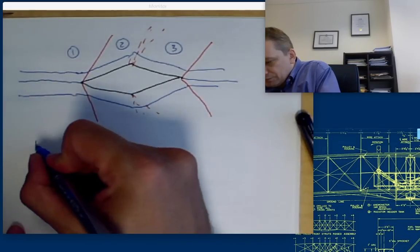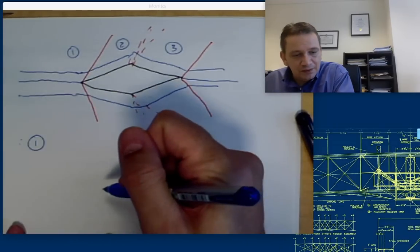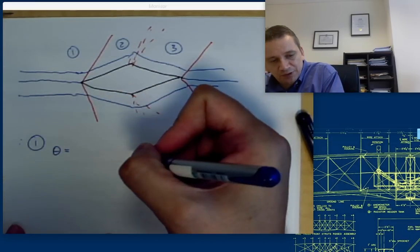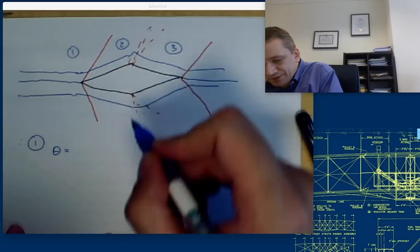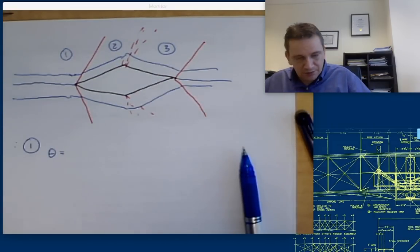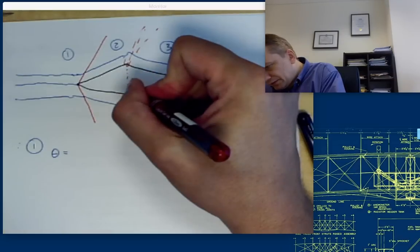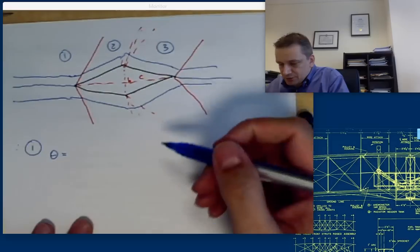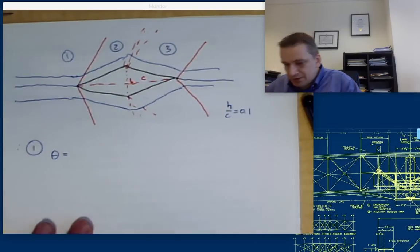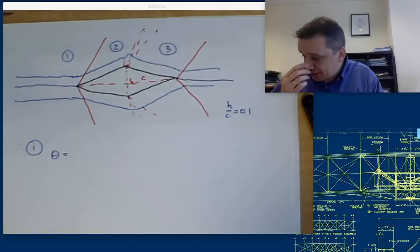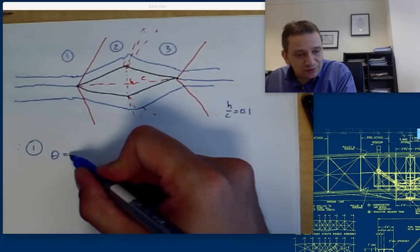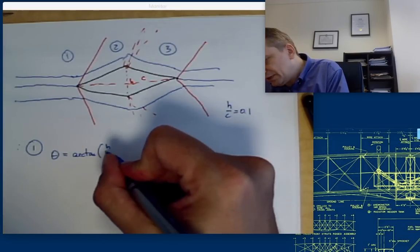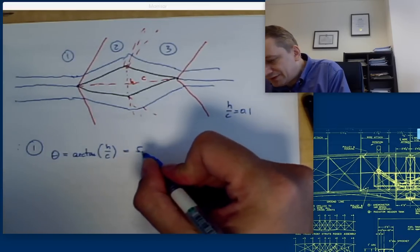So first we need to go to region 1. So we have a compression over there. We know our theta, the deflection angle. If the height, sorry, I'll draw it here. The height h, this is a chord length c, and h over c is going to be 0.1. So it's an airfoil with 10% thickness. So theta is going to be then the arctangent of h over c, that's going to be 5.7 degrees.